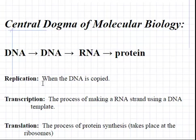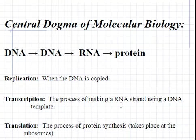First, replication. This is when DNA is copied, so DNA produces more DNA. This has to happen in cells before the process of cell division can occur. Second, we'll talk about the process of transcription. This is when DNA, a template strand, is used to produce an RNA molecule.